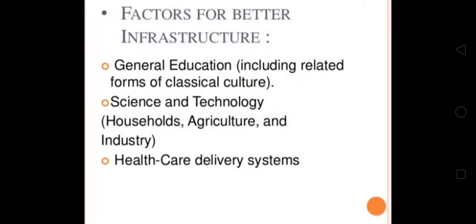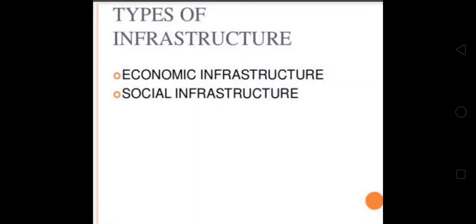Now, what are the factors required for better infrastructure? The first is general education, including classical, cultural, science and technology forms. The second covers households, agriculture, and industry. The third is a healthcare delivery system. These are the three required components of better infrastructure. There are also two types of infrastructure: economic infrastructure and social infrastructure.